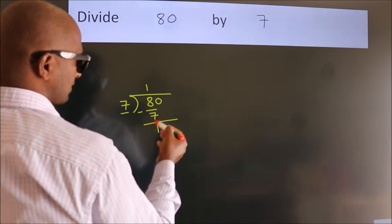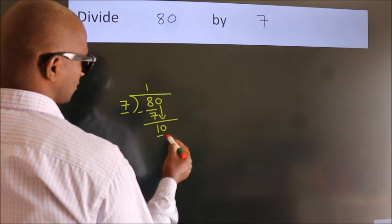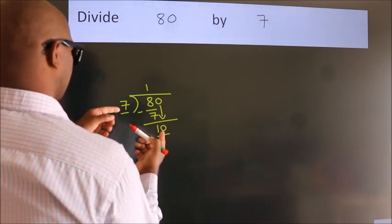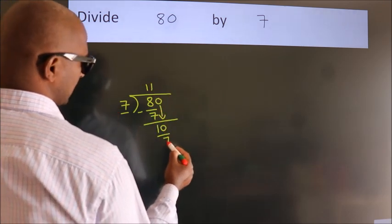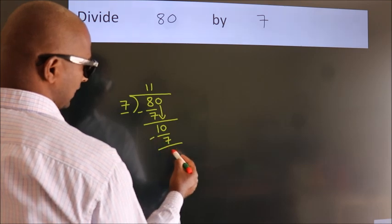After this, bring down the beside number, so 0 down, so 10. A number close to 10 in the 7 table is 7 once 7. Now we subtract, we get 3.